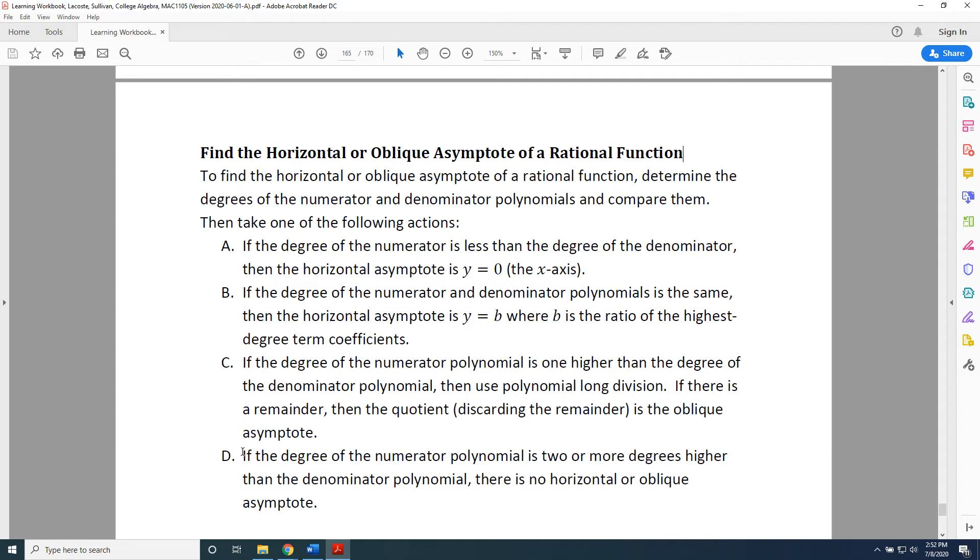Action D: If the degree of the numerator polynomial is two or more degrees higher than the denominator polynomial, there is no horizontal or oblique asymptote. A few comments about these four actions.